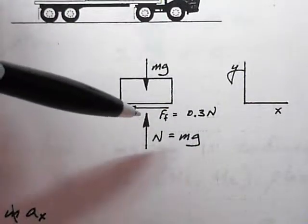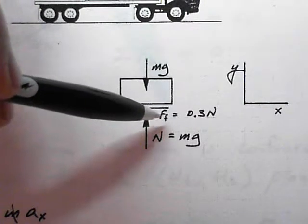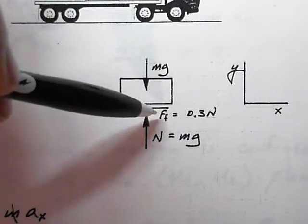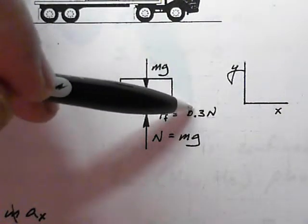If it hasn't slipped yet, the friction force is less than or equal to μ times N. In this case it's equal to μN because we want to find the greatest deceleration so that we're fixing to slip.